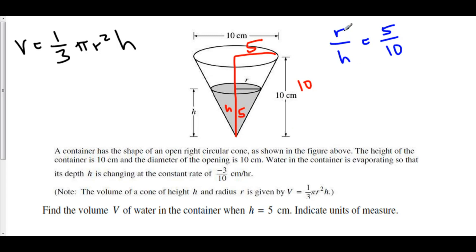Now, we want to know what the radius is at the moment when the height is 5. So r over 5 is equal to 5 over 10. That means that the radius at this particular moment is 1 half times 5. That's 5 over 2.